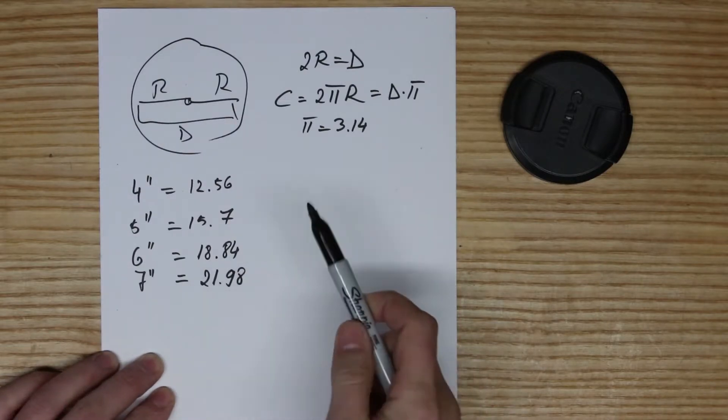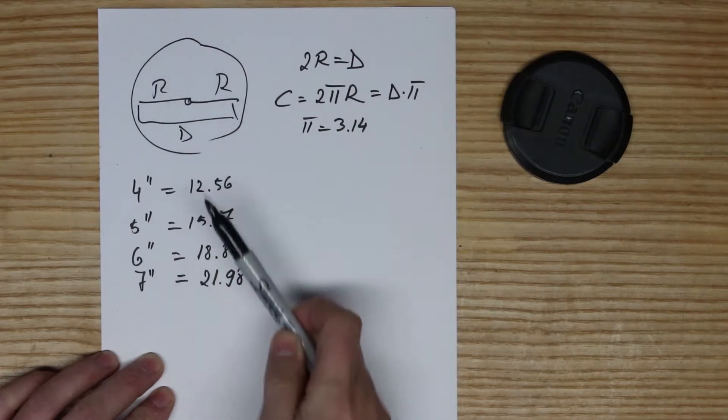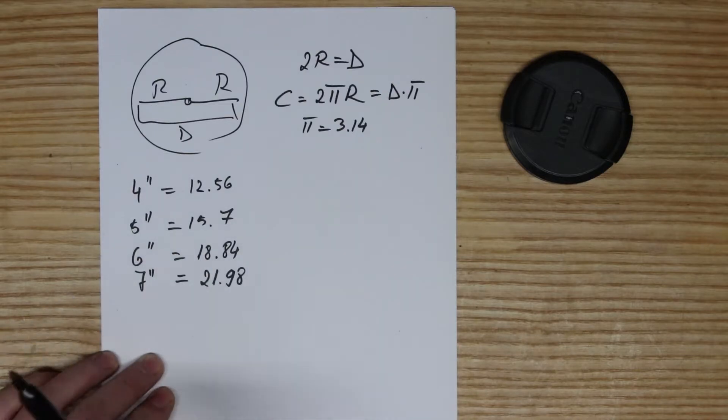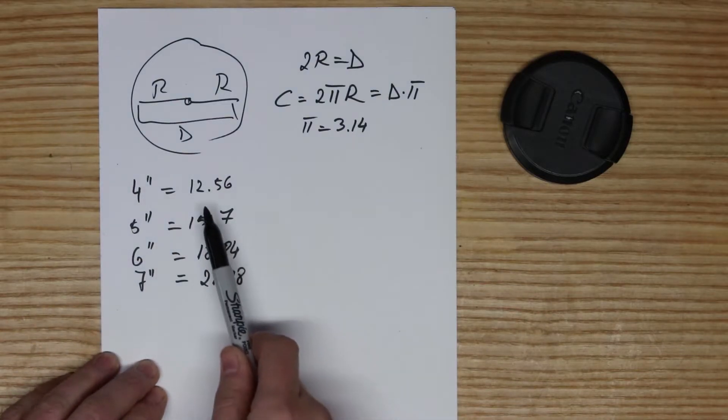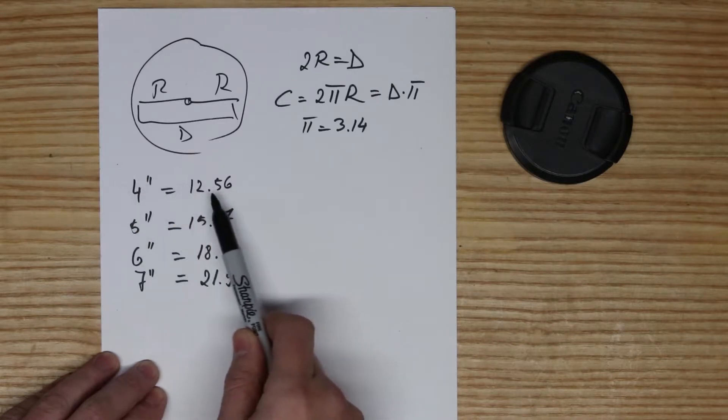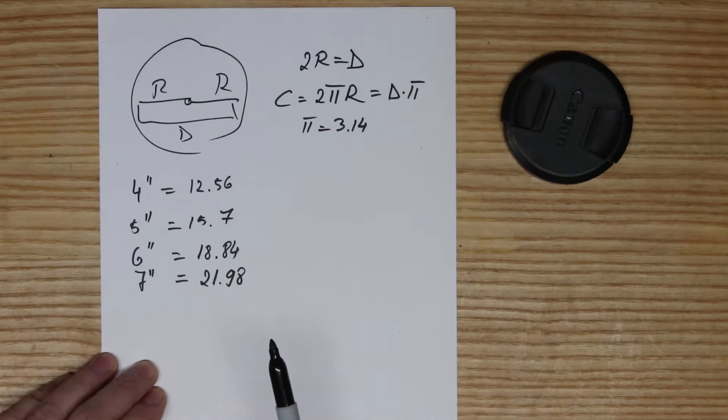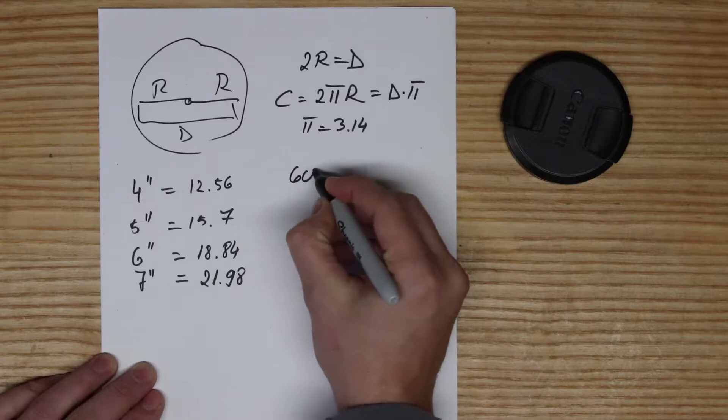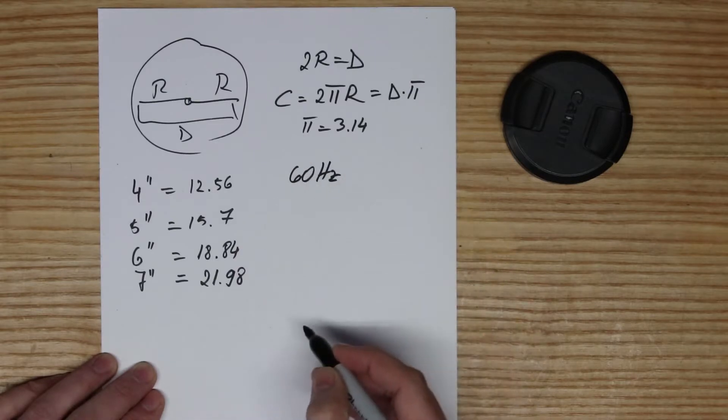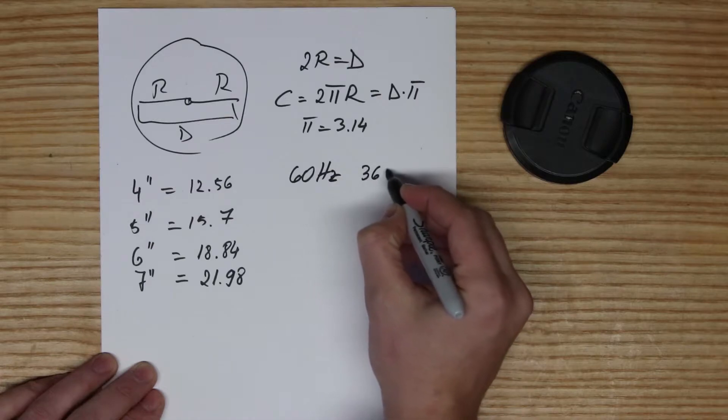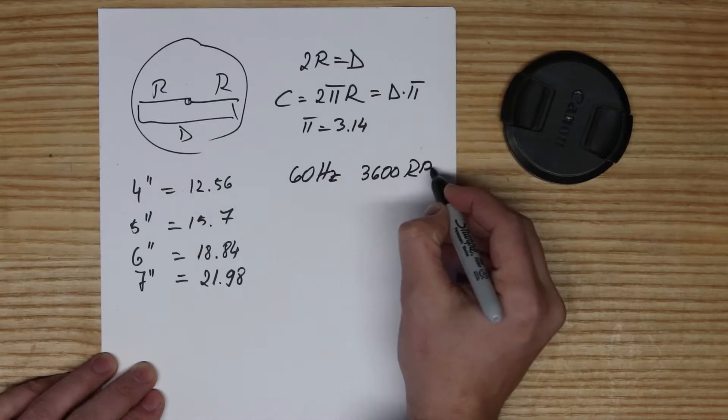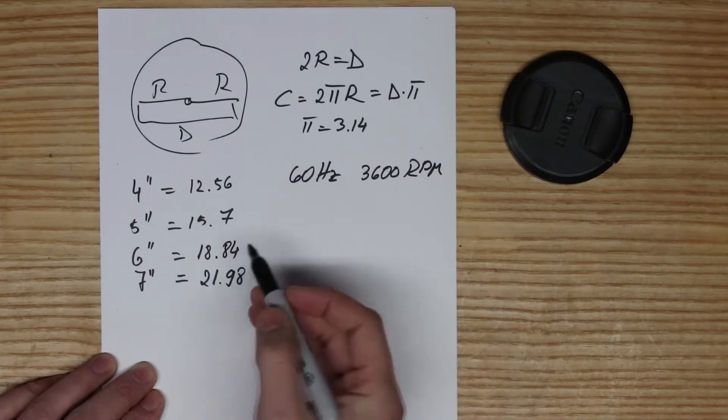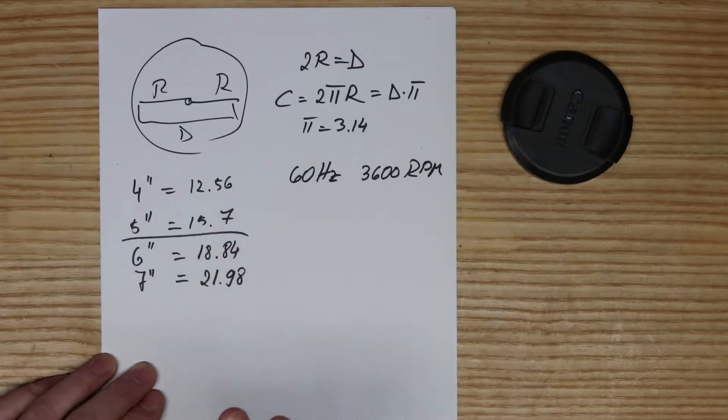What this means is for one revolution of this wheel, your surface or whatever belt you're using travels, let's say in a four inch wheel, 12.56 inches. Let's say you live in North America and your motor runs at 60 hertz, and you have a 3,600 RPM motor. Let's pick a middle one, a five inch drive wheel.